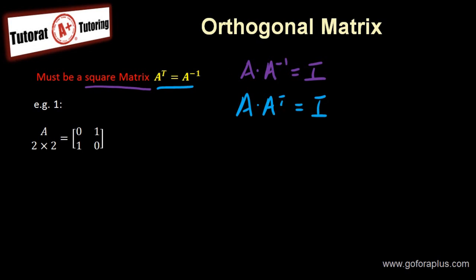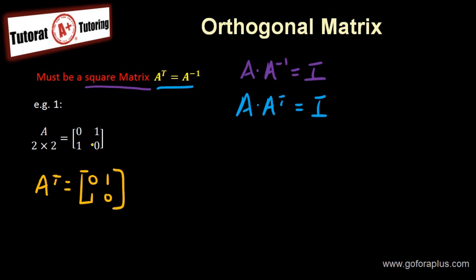Let's do an example together. So this is matrix A: [0, 1; 1, 0]. A transpose is also [0, 1; 1, 0]. In fact, this is a symmetric matrix.